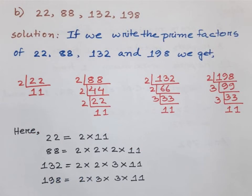For part (b), the numbers are 22, 88, 132, and 198. We will find the LCM. After performing prime factorization on each: 22 = 2 × 11; 88 = 2 × 2 × 2 × 11; 132 = 2 × 2 × 3 × 11; 198 = 2 × 3 × 3 × 11.